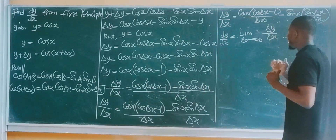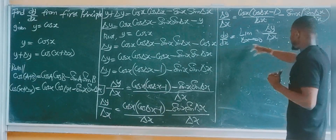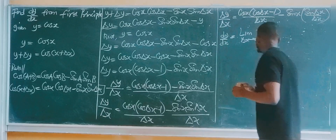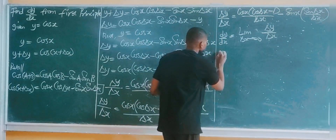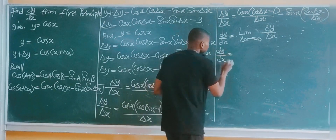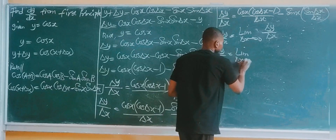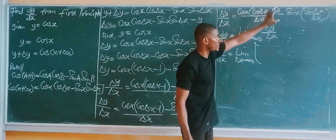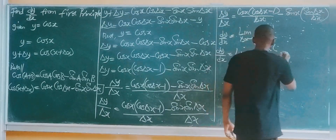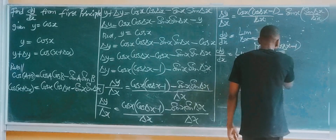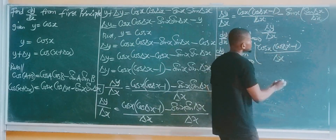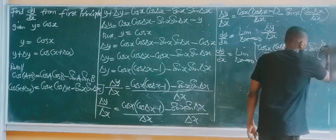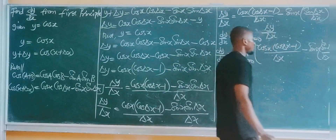So dy/dx is now equal to the limit as Δx tends to 0 of: cos x times (cos(Δx) minus 1) all over Δx, minus sin x times sin(Δx) all over Δx.